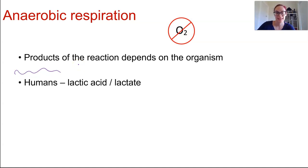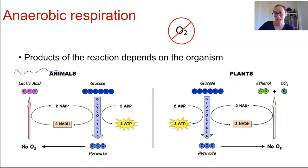In humans, it creates lactic acid or lactate. In yeast and plants, we're making ethanol and carbon dioxide. So these products are waste products, and they can be toxic if they start to accumulate in excess within the organism.